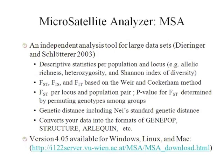Also, three F-statistics including FST, FIS, and FIT are calculated based on the Weir and Cockerham method. For FST, for local and population pairs, the p-value is given based on a permutation test. This program also implements several methods to calculate genetic distance, including MACE and the standard genetic distance.